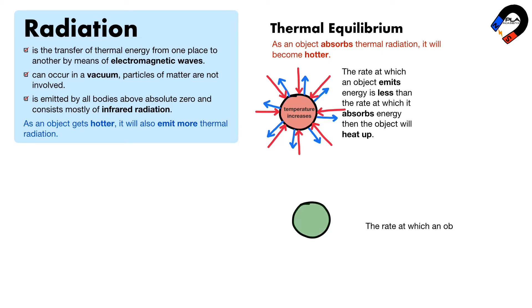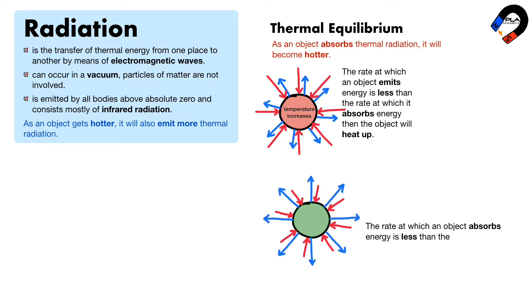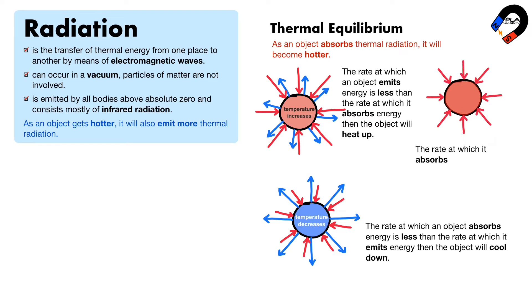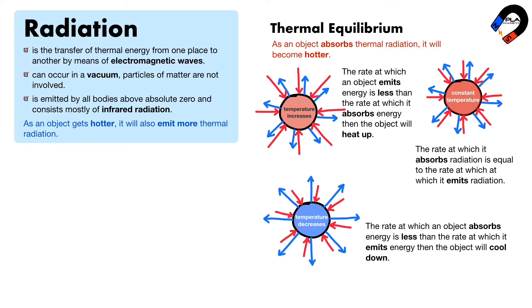If the rate at which an object absorbs energy is less than the rate at which it emits energy, then the object will cool down. Both processes will always move towards thermal equilibrium. Eventually, the object will reach a point of constant temperature where the rate at which it absorbs radiation is equal to the rate at which it emits radiation. At this point, the object will be in thermal equilibrium.